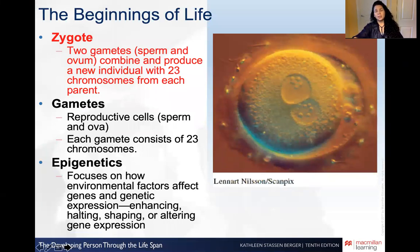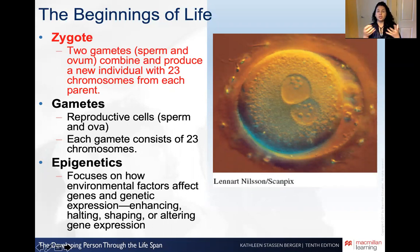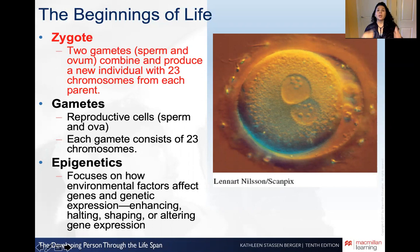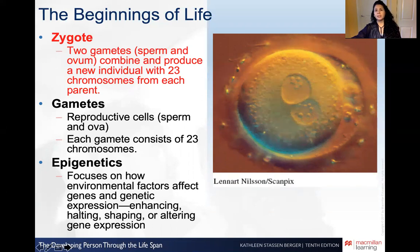What is a zygote? A zygote is when two gametes — a sperm and an ovum — combine to produce a new individual with 23 chromosomes from each of the contributing parents. So 23 from the sperm and 23 from the ovum to create new life. A zygote is what we call what happens at conception — when we conceive to have a child, we form this zygote.